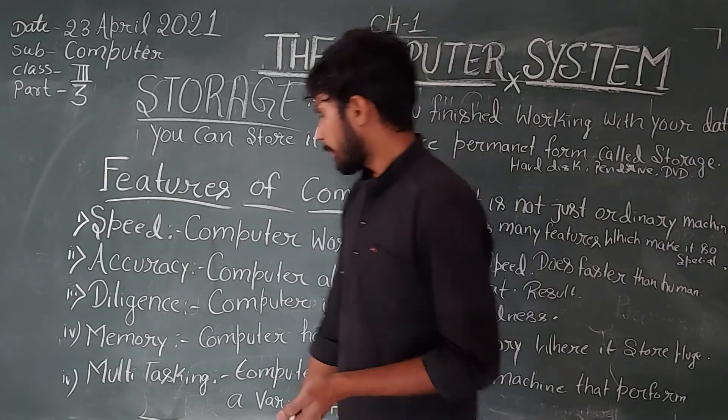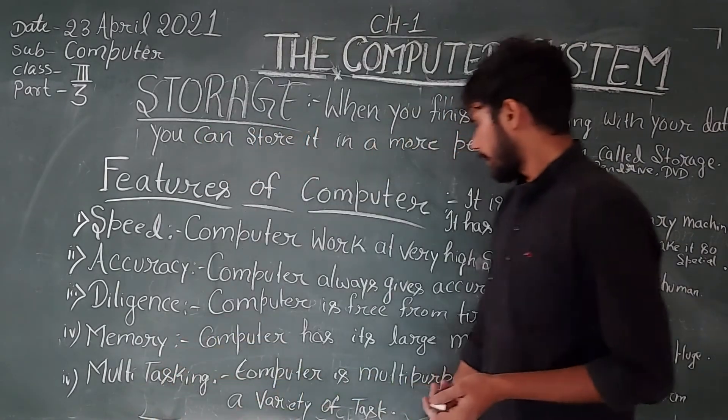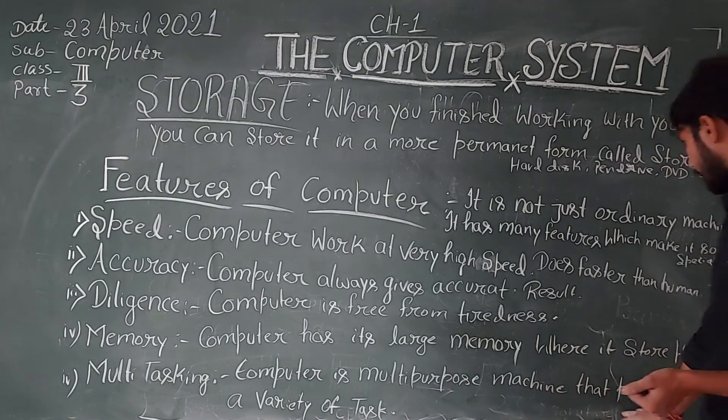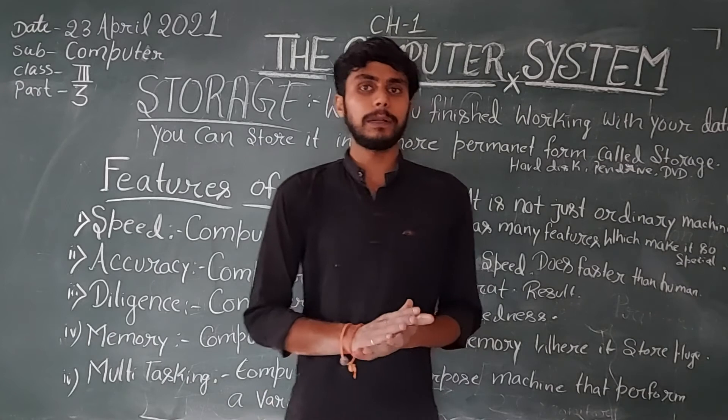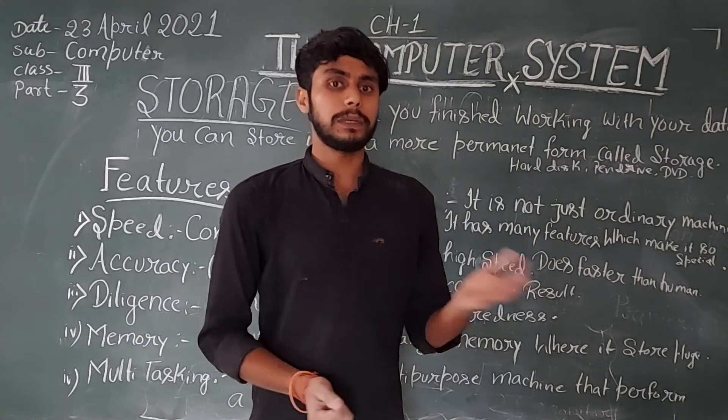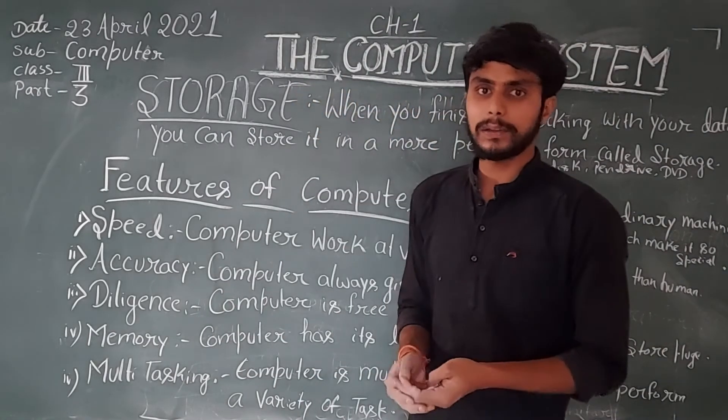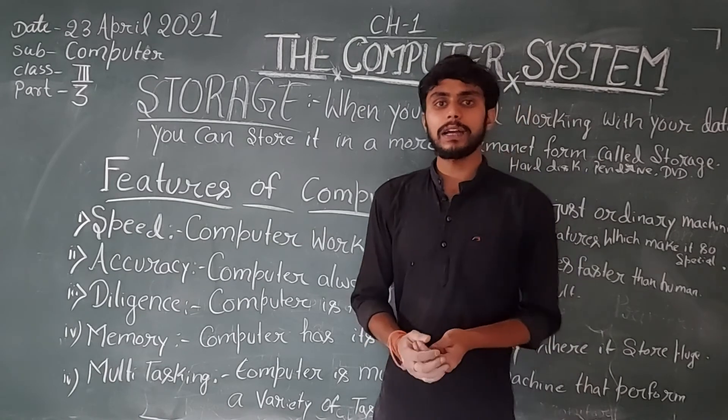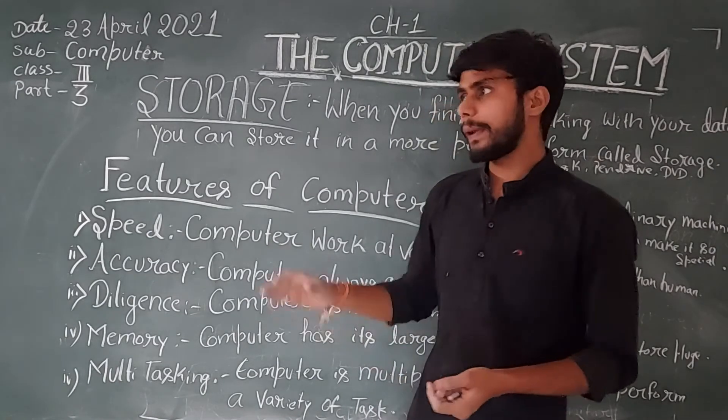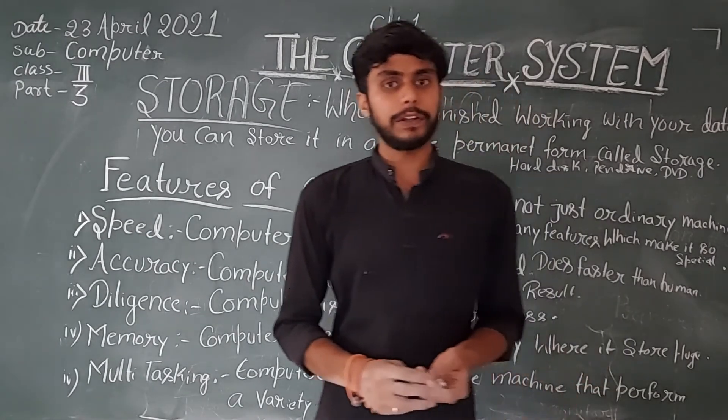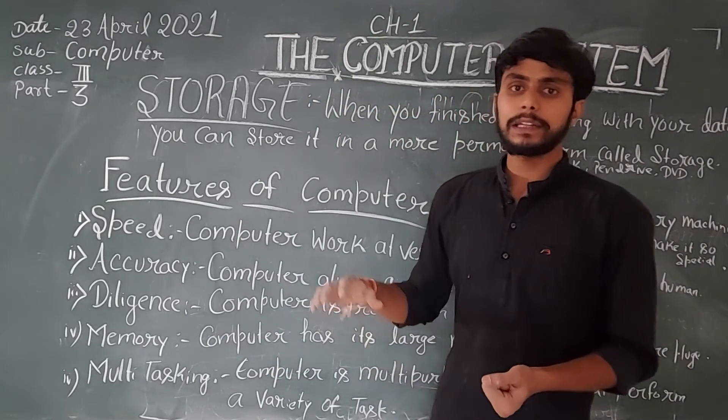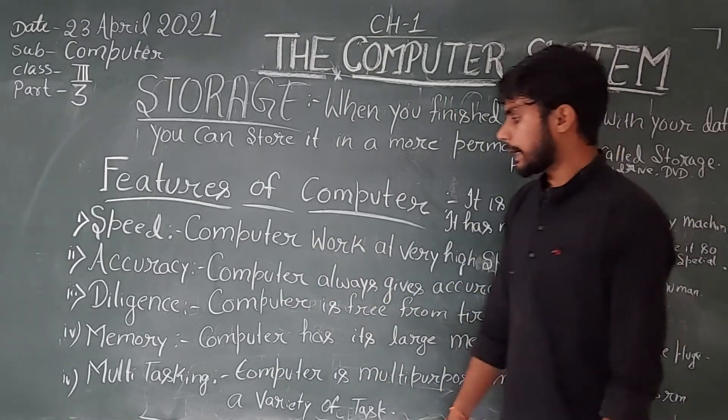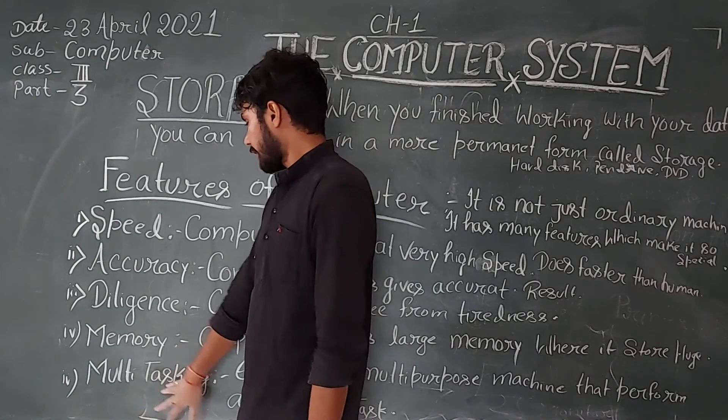After that, we talk about multi-tasking computer. It is a multi-purpose machine that performs a variety of tasks. If you want to do other things, then you can do it on the computer. For example, playing a game, as well as making a presentation. You can do it on the computer. We are talking about a multi-tasking machine.